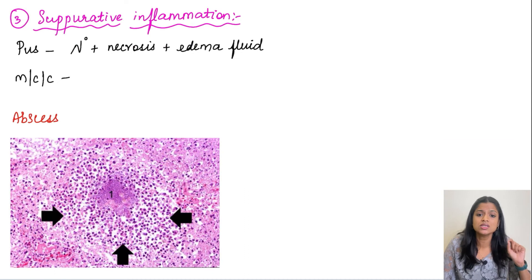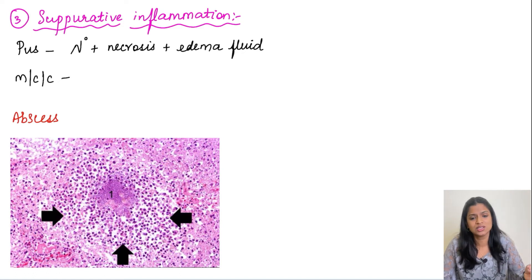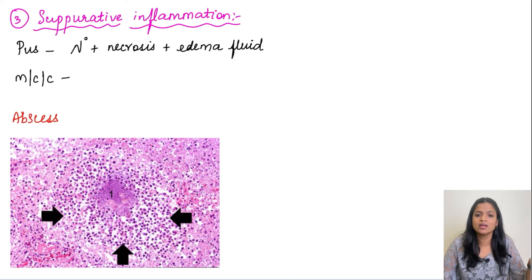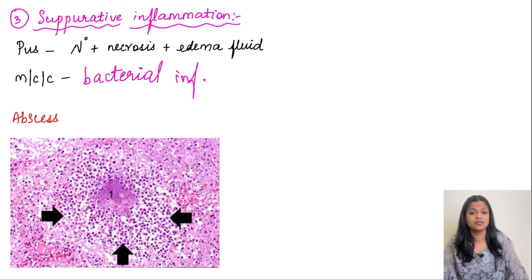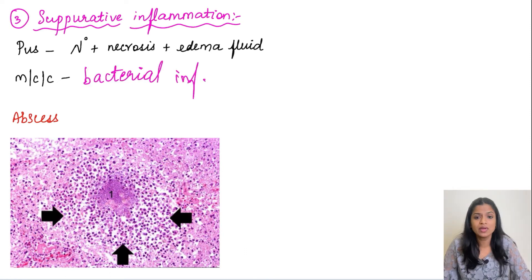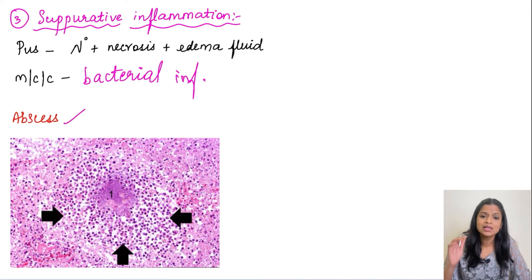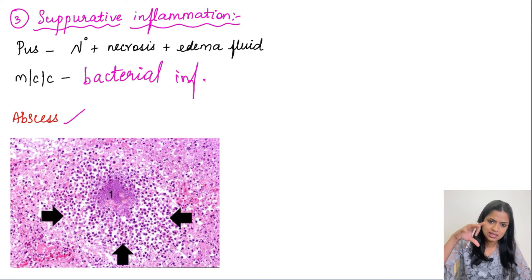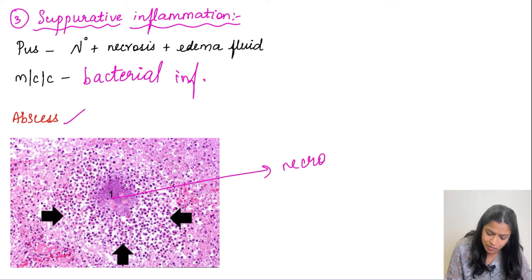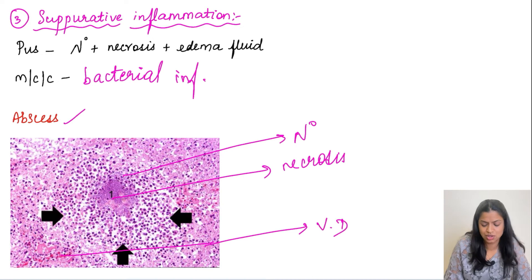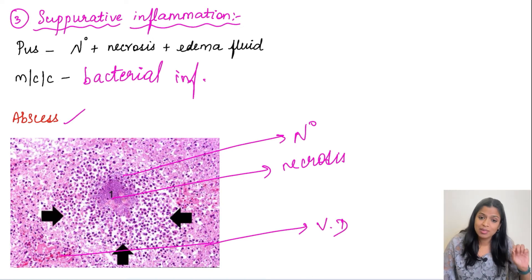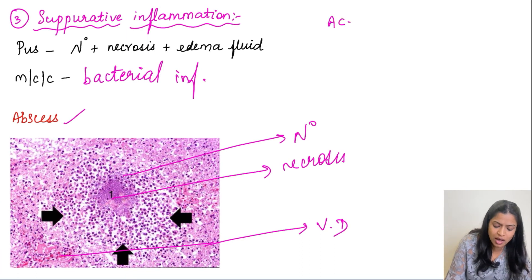Moving on to the third type, suppurative or purulent inflammation. Pus discharge is nothing but purulent inflammation. Pus contains necrotic material along with neutrophils and edema fluid. Bacterial infection is the most common cause. When pus forms a localized collection, it is termed an abscess. In an abscess, the center contains necrotic material, surrounded by viable neutrophils, with vascular dilatation and congestion around it. The best example of suppurative inflammation is acute appendicitis.